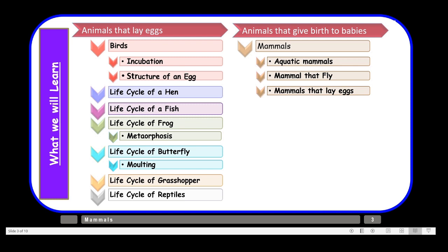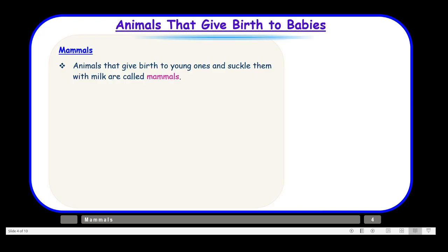In our previous two videos we talked about animals that lay eggs, and now in this video we will talk about animals that give birth to babies. So let us first understand the term mammals. What are mammals? Animals that give birth to young ones and suckle them with milk are called mammals.